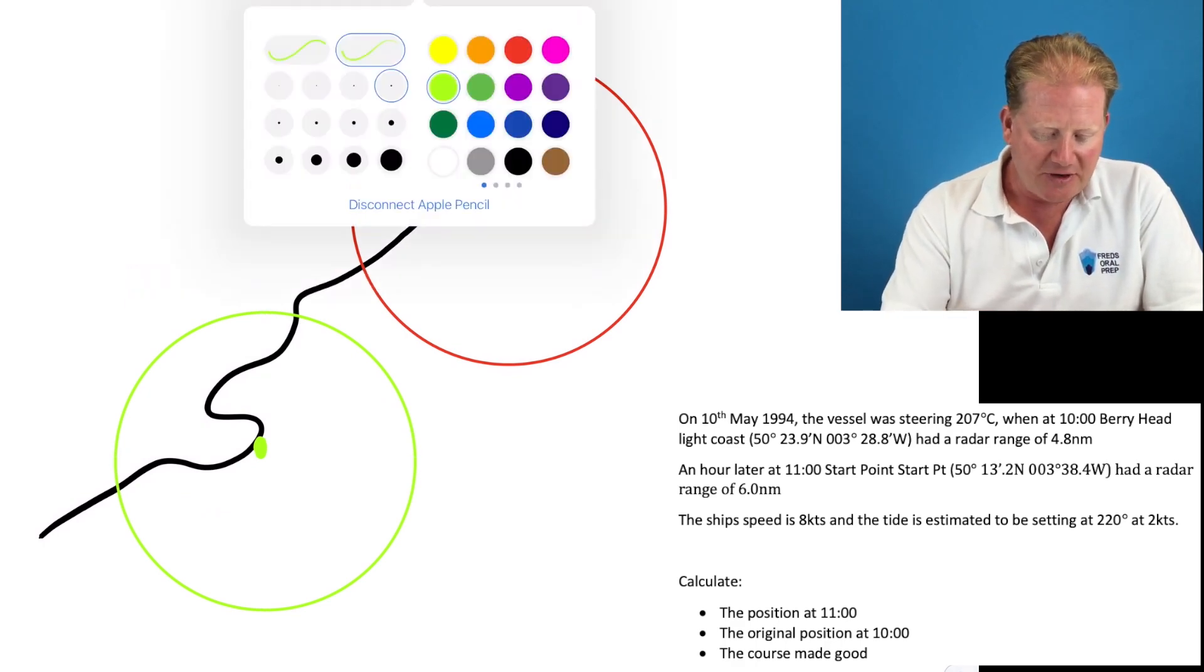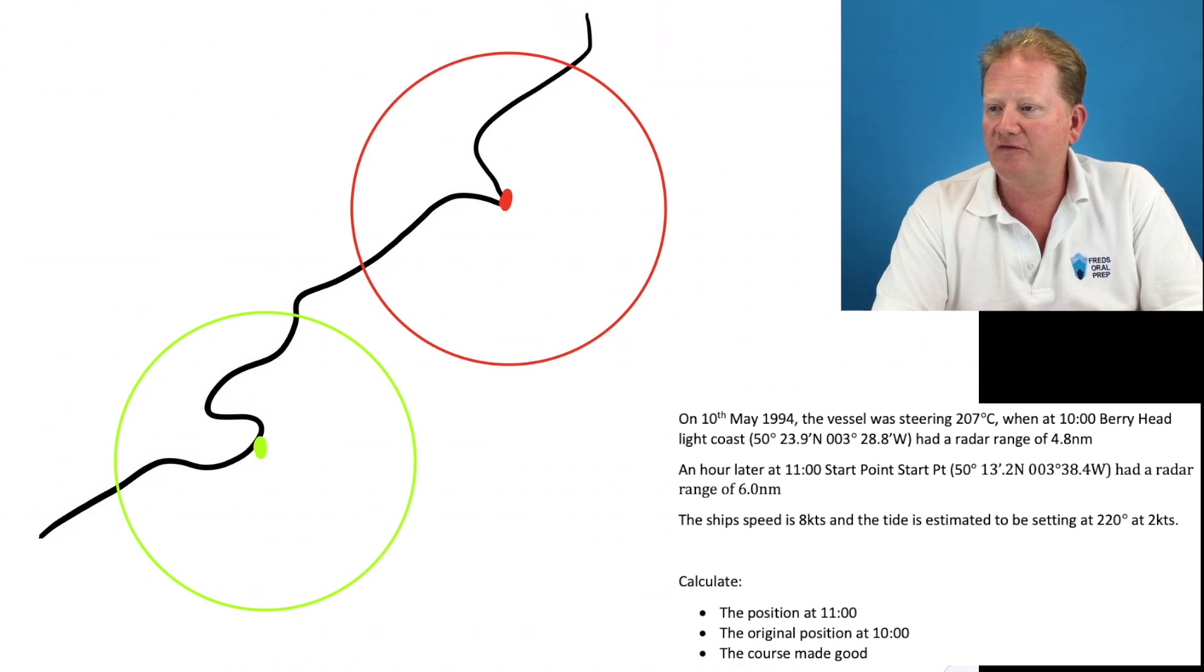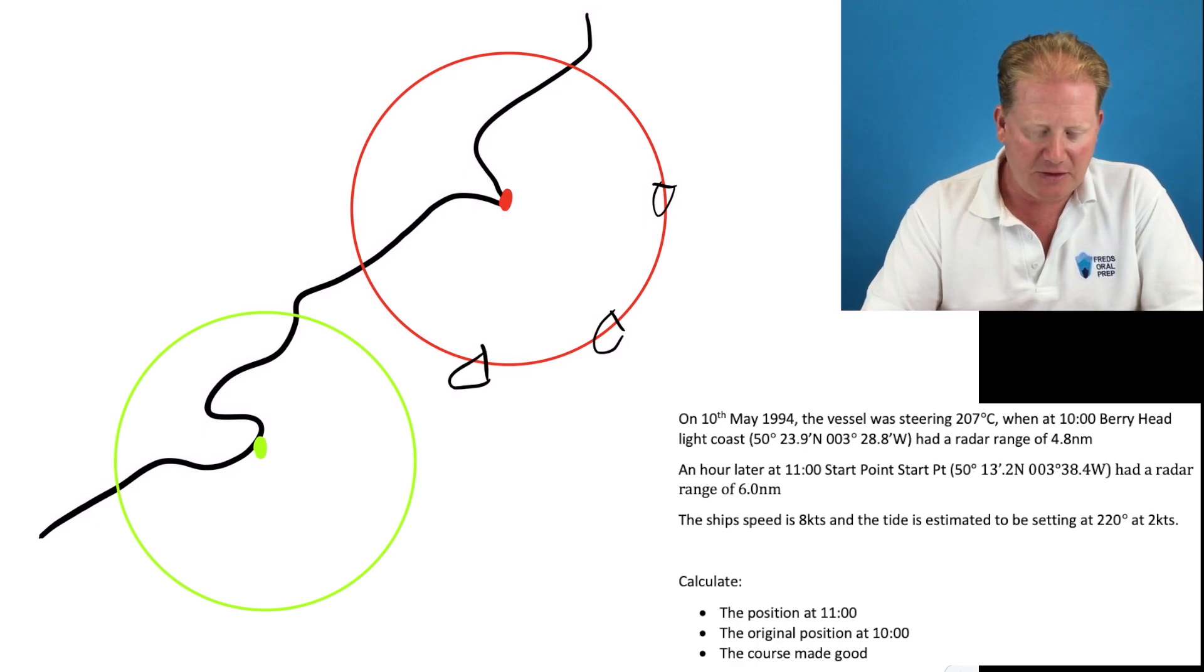It doesn't really matter. There's more of a concept I want you to get. And we are steering a course of 207 compass. So we convert that to true, so that's about 200 degrees. And then we have some tide of 220 at two knots. Now we are anywhere on this red radar range at the beginning. We don't know where we are. That's the problem.